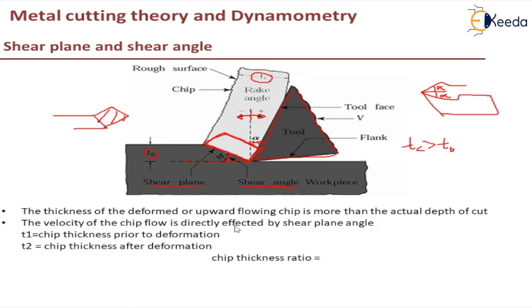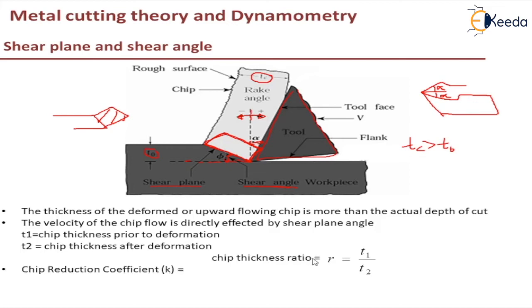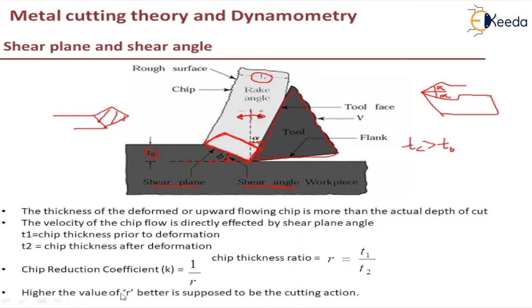The velocity of chip flow is directly affected by the shear plane angle. If I take T1 as chip thickness prior to deformation and T2 as chip thickness after deformation, the chip thickness ratio is given as r, which equals T1 divided by T2. Since T2 is greater than T1, the chip thickness ratio will be a decimal, around 0.1 to 0.2. There is also a term called the chip reduction coefficient, k, which is the reciprocal of chip thickness ratio. The significance is that a higher value of chip thickness ratio means better cutting action.